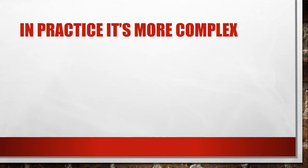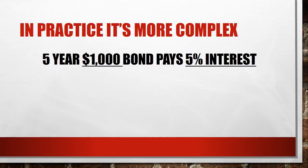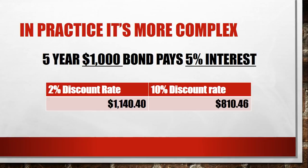The present values is where the complexity comes in. The value of the bond depends on the assumptions you make, and we call this the discount rate. We take a rate of return and work backwards using this rate, and when we use different rates we get totally different bond values.